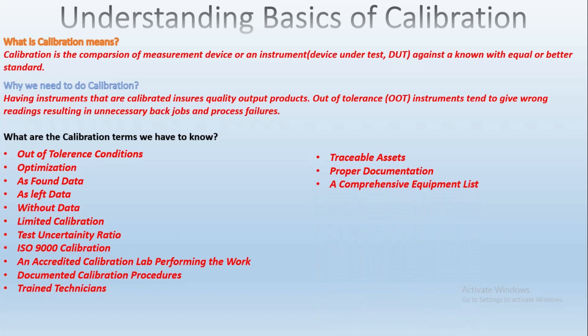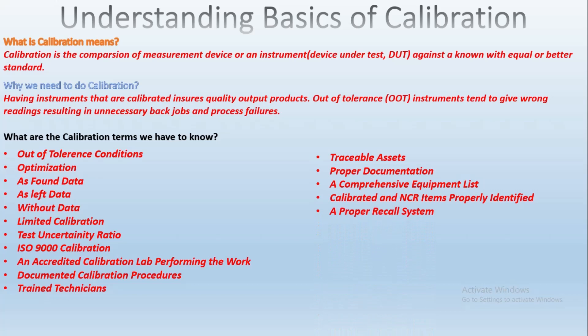The next requirement is a comprehensive equipment list. For any manufacturer to pass an ISO audit regarding calibration, they must demonstrate a comprehensive equipment list with controls covering additions, subtractions, and custodianship of equipment. The equipment list must also identify any units that do not require calibration, and controls must be in place to ensure these units are not used in any application that requires calibration.